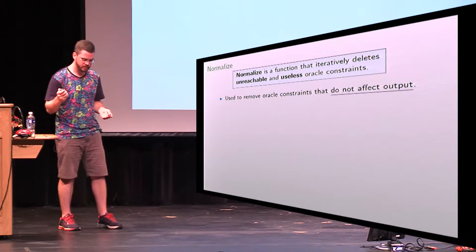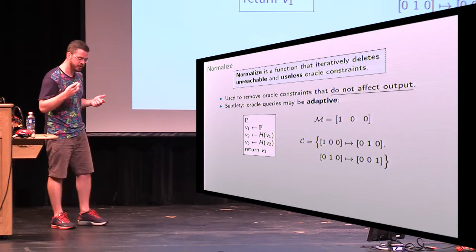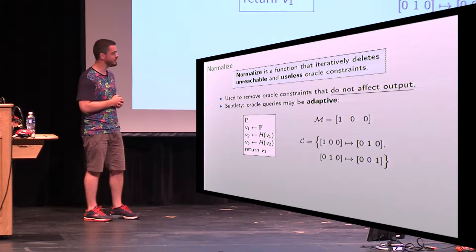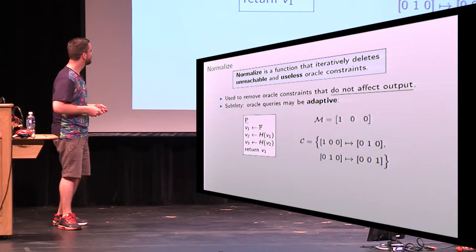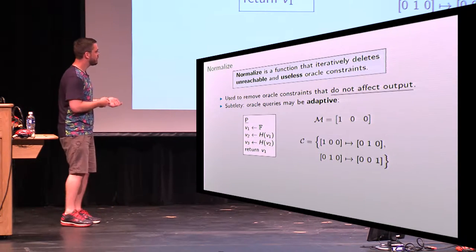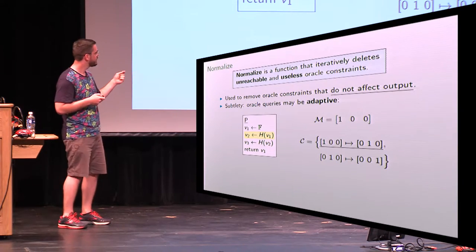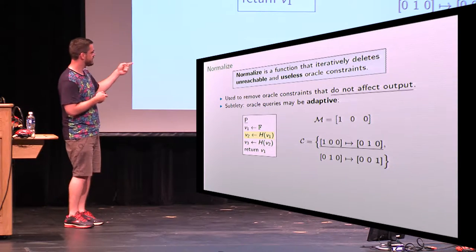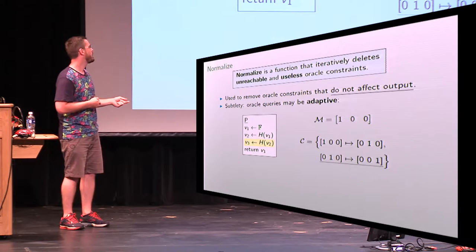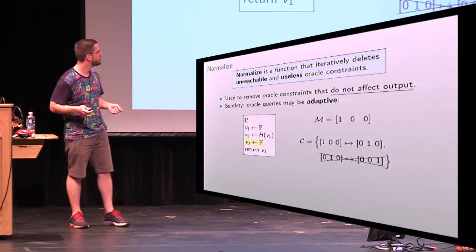There's a subtlety: oracle constraints can be adaptive — you can query at a point that is the result of a previous query. Here's an example: you sample V1, query at that point, then query again, but just return V1. The output matrix is just V1, with two oracle constraints. Looking at the algebraic representation, we don't know a priori whether these are reachable and useful. The first looks reachable and its output V2 is used in another oracle constraint — so it looks useful. But the second oracle constraint's output is useless since it's not in the span of anything else, so we delete it. That makes the first oracle constraint useless as well, so we delete that too.